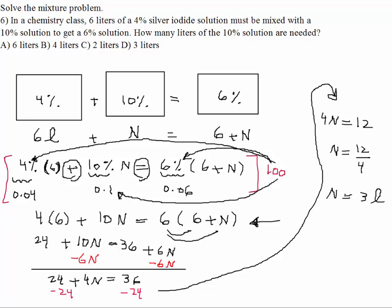So we have to have 3 liters of 10% solution in order to ultimately get 6% for the final solution. So which would be the right choice here? D, right? Very good. Any questions, anyone, so far?